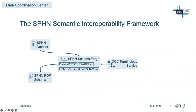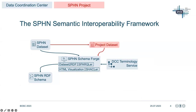In SPHN, research projects have the flexibility to extend the semantics defined in the SPHN dataset for encoding elements that are not yet covered but which are needed for project research purposes. Once this extension is done, they can use the Schema Forge to build, among other things, the project-specific RDF schema and its corresponding Shackle rules.